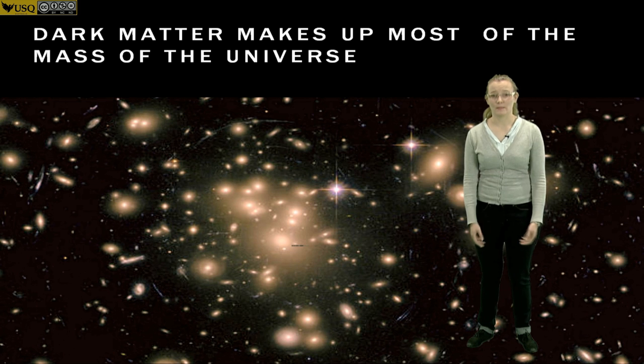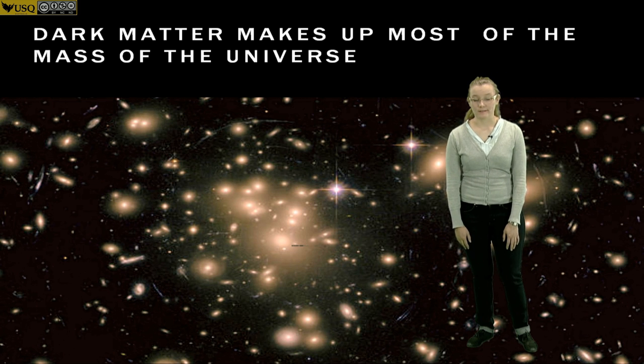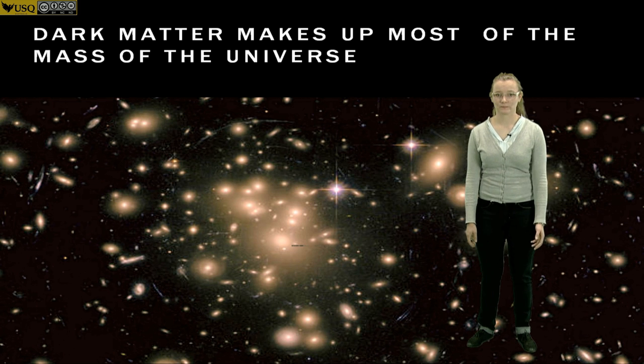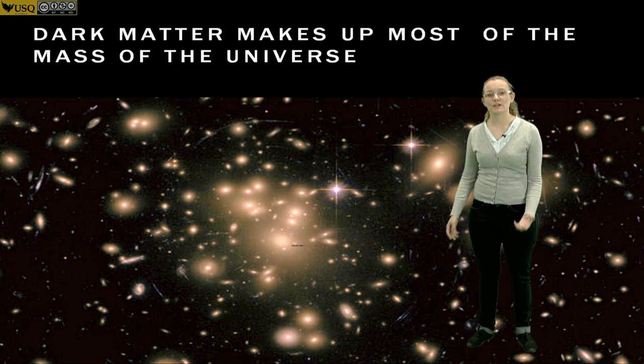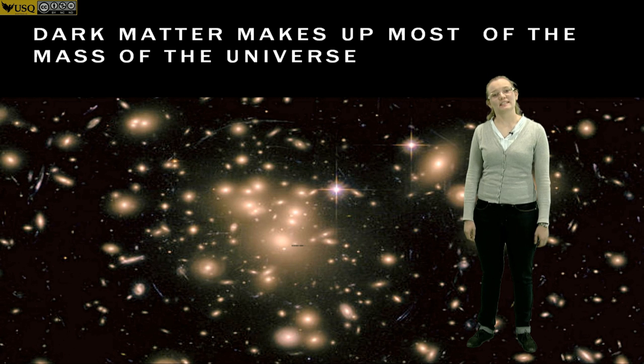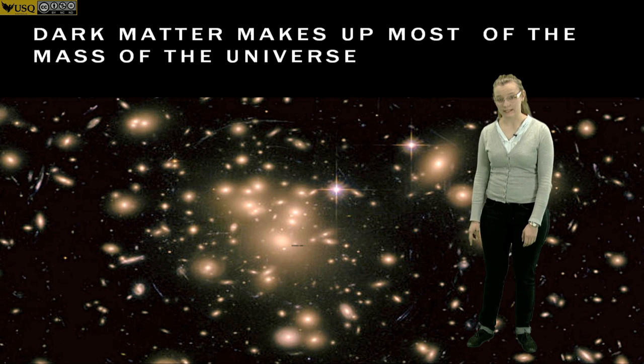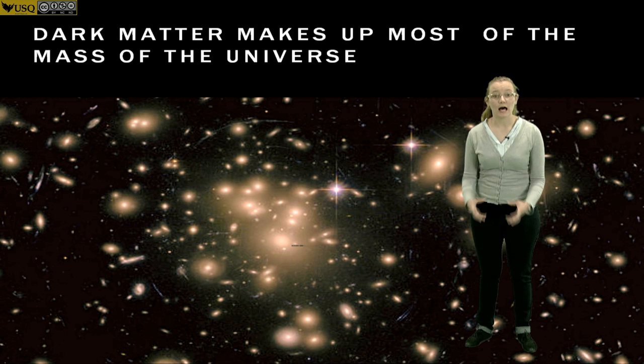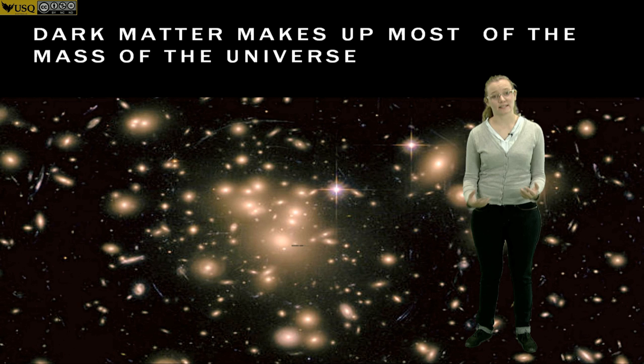So what about dark matter? There is dark matter in this picture. How do we know? Well, we know by measuring the mass of this galaxy cluster. Now we can measure mass in two different ways. Firstly, we can look at the amount of light that's coming from this cluster and use that as a mass measurement.